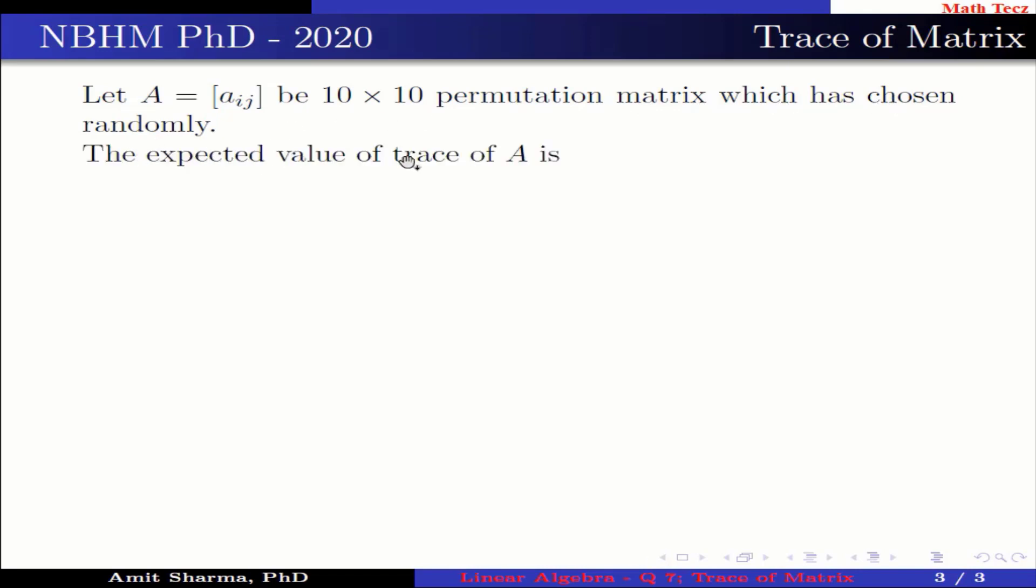The expected value of trace of A is 1 over 10 factorial times the summation over A belongs to G of trace of A, which is further written as 1 over 10 factorial summation over A belongs to G of a_ii.